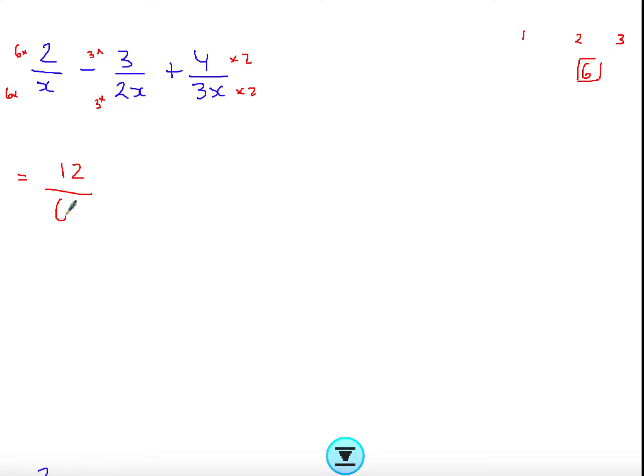That will be 12 over 6x minus 9 over 6x plus 8 over 6x. I'm going to keep the denominator and bring the numbers together. Just be careful with a minus. If this was an expression, like x plus 2, then the minus belongs to the whole expression. The negative belongs to the fraction, it means it belongs to both numbers. So you have to put brackets in there. When you bring them together, multiply the negative out. Just be aware of negatives when dealing with these.